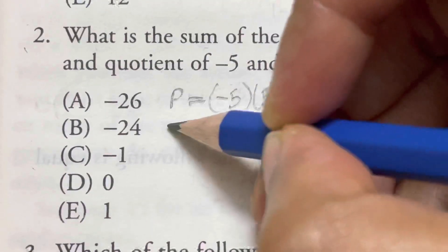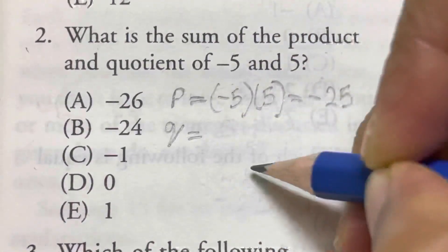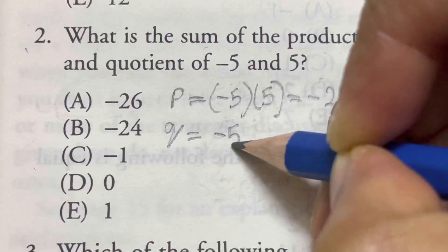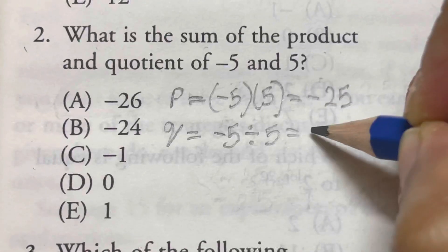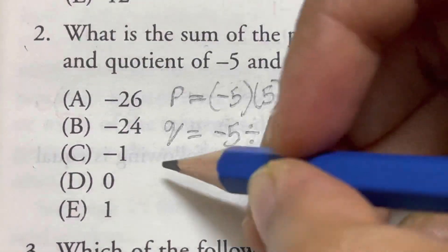Now what is quotient? Quotient is just division of minus 5 and 5. So minus 5 divided by 5 is just minus 1.